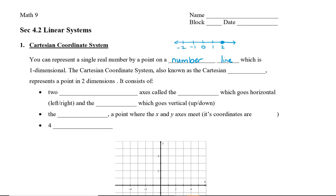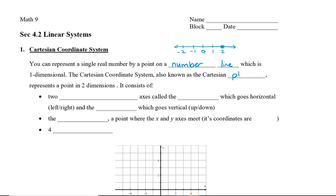Now the Cartesian coordinate system, also known as the Cartesian plane, represents a point in two dimensions. It consists of two perpendicular axes: the x-axis, which runs horizontally going left and right, and the y-axis, which runs vertically, up and down.